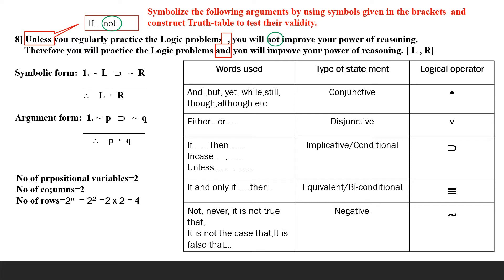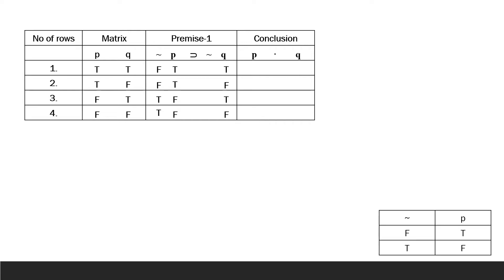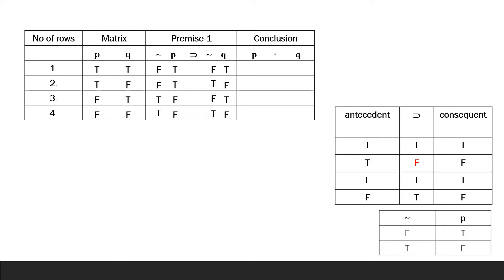The number of propositional variables is 2, so the number of columns is 2 and the number of rows will be 2 raised to 2, equal to 4. We write the truth table with the matrix, premise 1, and conclusion. We write the combination of propositional variables P and Q. Half of 4 is 2, so below P we assign 2 trues and 2 falses. P's values in the premise are assigned: true, true, false, false.